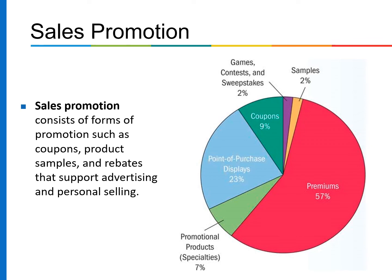Sales promotion was seen as a supplement to firms' advertising, but it has emerged as an integral part of the promotional mix. Sales promotion consists of forms of promotion such as coupons, product samples, rebates, sporting advertising, and personal selling. Looking at the breakdown: premiums hold a 57% share in sales promotion, point-of-purchase displays 23%, promotional specialty items 7%, samples 2%, and games, contests, and sweepstakes 2%.